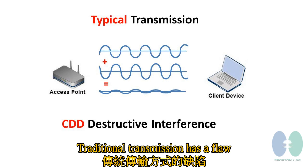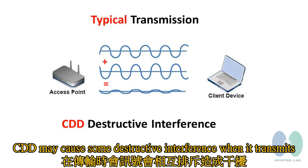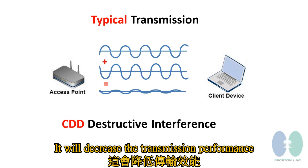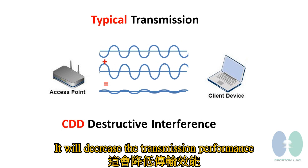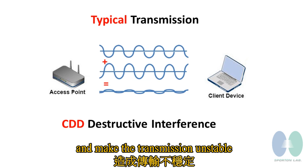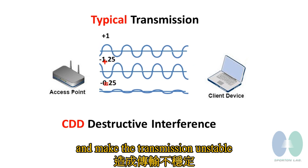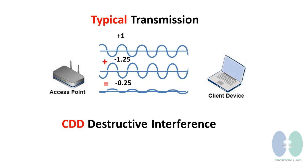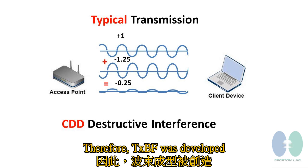Traditional transmit has a flow. CDD makes some destructive interference when it transmits, which will decrease the transmission performance and make the transmission unstable. Therefore, transmit beamforming was developed.